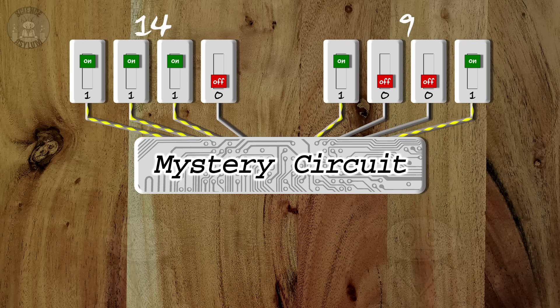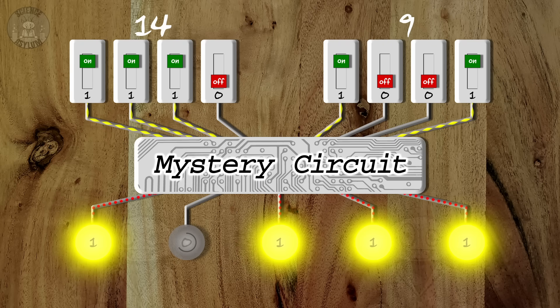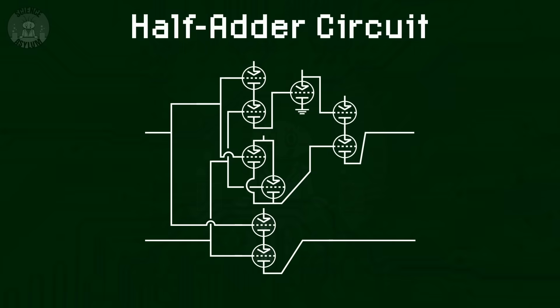If we send those signals through a mystery circuit, it ultimately activates a set of lights that we interpret just like the switches. The answer is twenty-three. It's not really a mystery — I just haven't had the chance to explain it. That circuit is also made of switches, quite a few actually. It's just that these switches we've been working with so far are all manual, and we need these new ones to be automated.